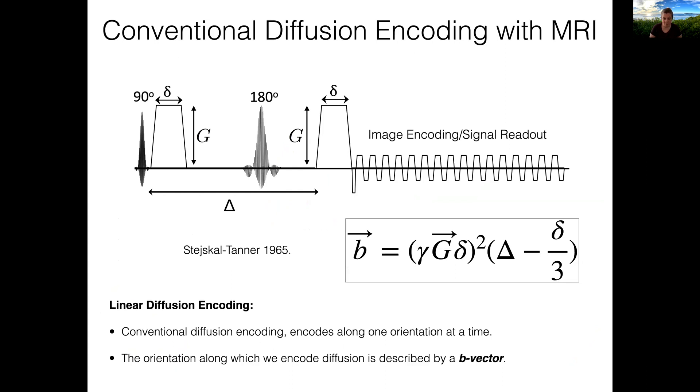It is also amazing to consider that the way we encode diffusion hasn't really changed in more than half a century. The majority of diffusion MRI scans today still use the same pulsed field gradient scheme presented by Stejskal and Tanner in 1965. We will refer to this conventional type of encoding as linear encoding because in contrast to the encodings we will discuss in a moment, it encodes along one orientation at a time and that orientation is captured by a b-vector.